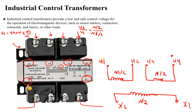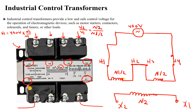Now what if I have an input of 480 volts? For this case, connect H3 to H2 — these two terminals are connected together. Then connect the first terminal of the supply to H1 and the second terminal to H4. You will see that these two coils are now in series, so the total voltage is 480 volts and the total number of turns is N1.